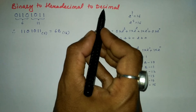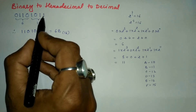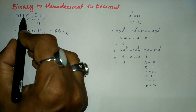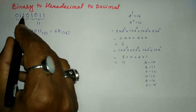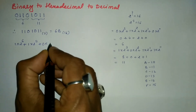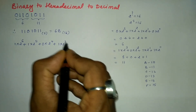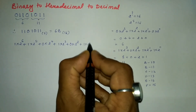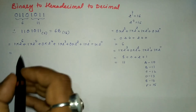Now let us convert this binary number into the decimal number system. The positional weights of the bits in 1101011 are 0 through 6. So we write: 1×2⁶ + 1×2⁵ + 0×2⁴ + 1×2³ + 0×2² + 1×2¹ + 1×2⁰.